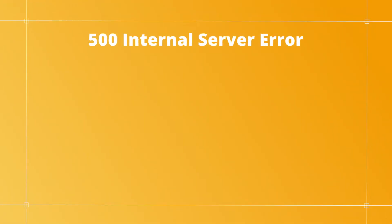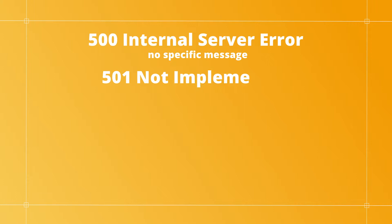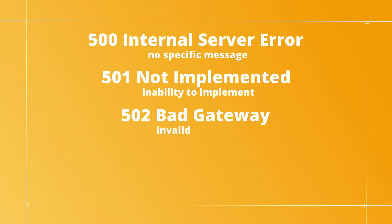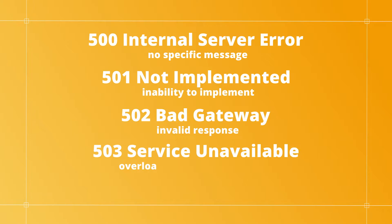If there's some other issue, you will get one of these. 500: Internal server error — a generic error message with no specific messaging. 501: Not implemented — the server doesn't recognize the request method or lacks the ability to fulfill it. 502: Bad gateway — the server is acting as a gateway or proxy and receives an invalid response from the upstream server. 503: Service unavailable — the server is temporarily unable to process the request because of an overload or it's down for maintenance.